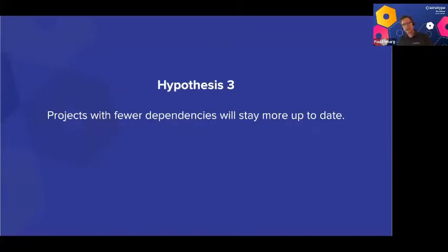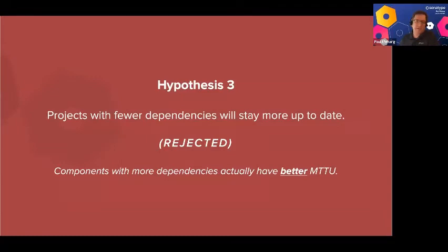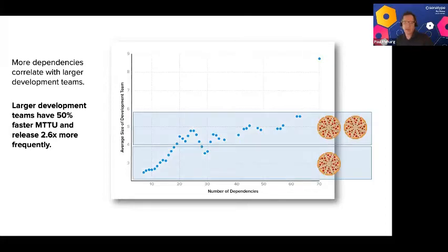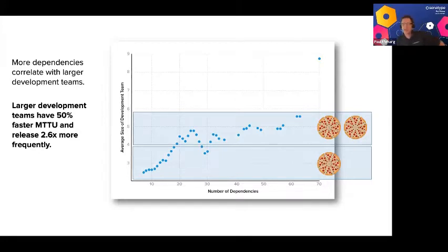Our next hypothesis: projects with fewer dependencies will stay more up to date. It seems like fewer things to track would make it easier. Interestingly, that did not prove true — we could not find a correlation between fewer dependencies and keeping those dependencies up to date. However, smaller teams tended to have worse mean time to repair than larger teams.